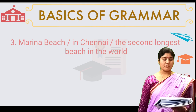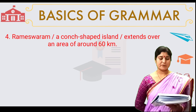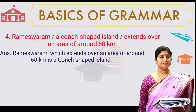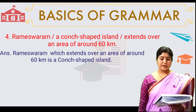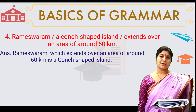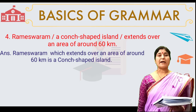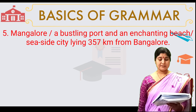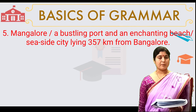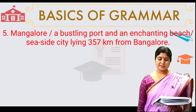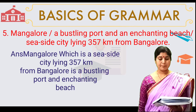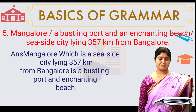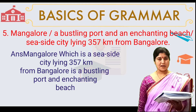Number four: Ramiswaram, a conch-shaped island, extends over an area of around 60 km. Answer: Ramiswaram, which extends over an area of around 60 km, is a conch-shaped island. Number five: Mangalore — a bustling port and an enchanting beach, a seaside city lying 357 km from Bangalore. Answer: Mangalore, which is a bustling port and an enchanting beach, is a seaside city.